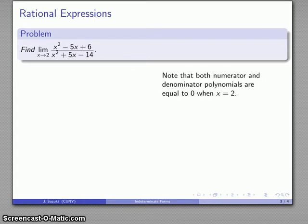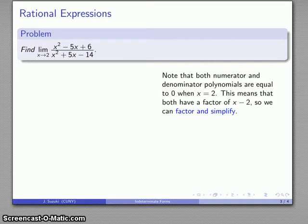Now the fact that they're both equal to 0 when x equals 2 is actually a good thing, because there is a theorem that you learned in algebra, which is that if a value of x makes the polynomial equal to 0, then that value of x corresponds to a factor of the polynomial.